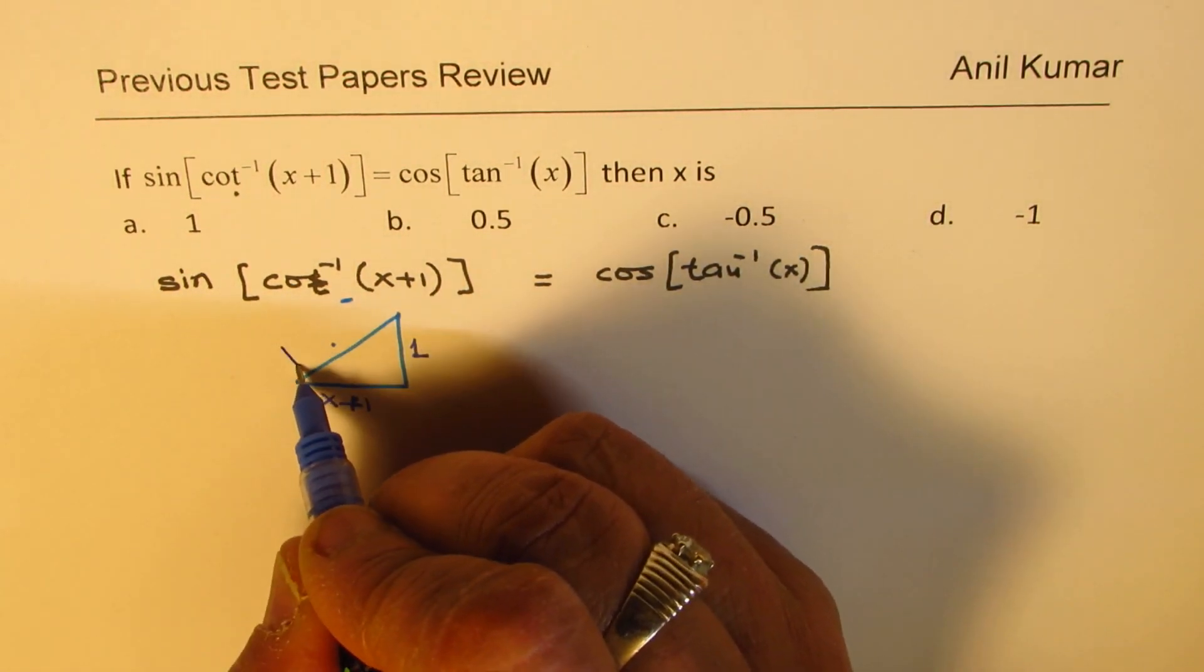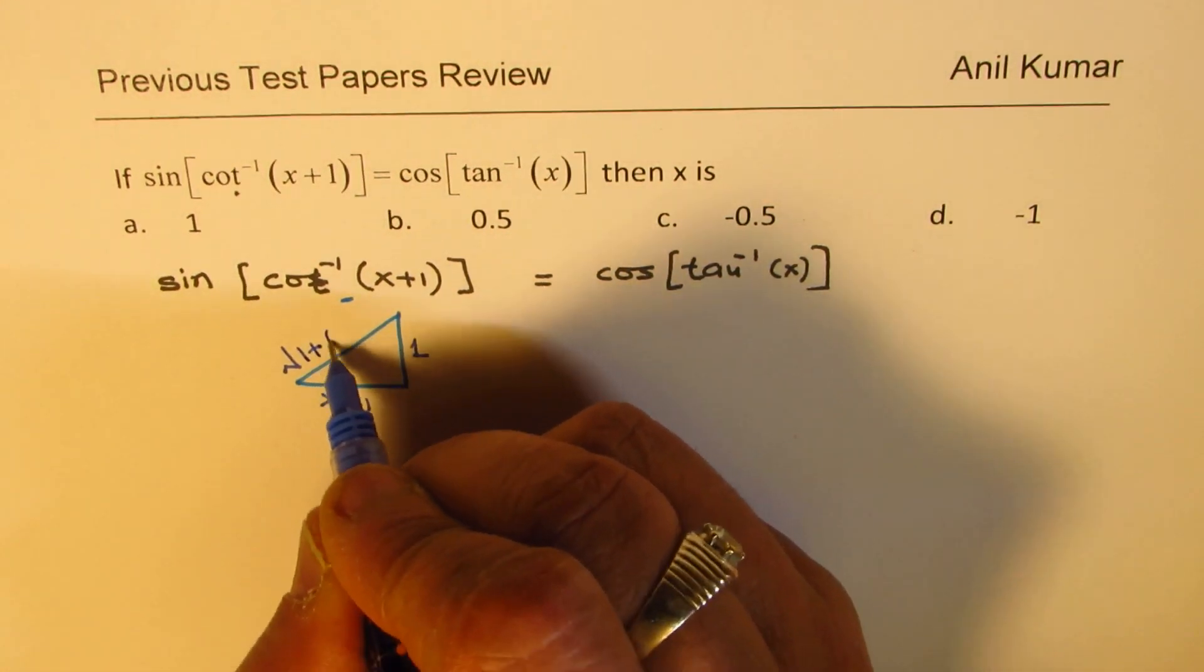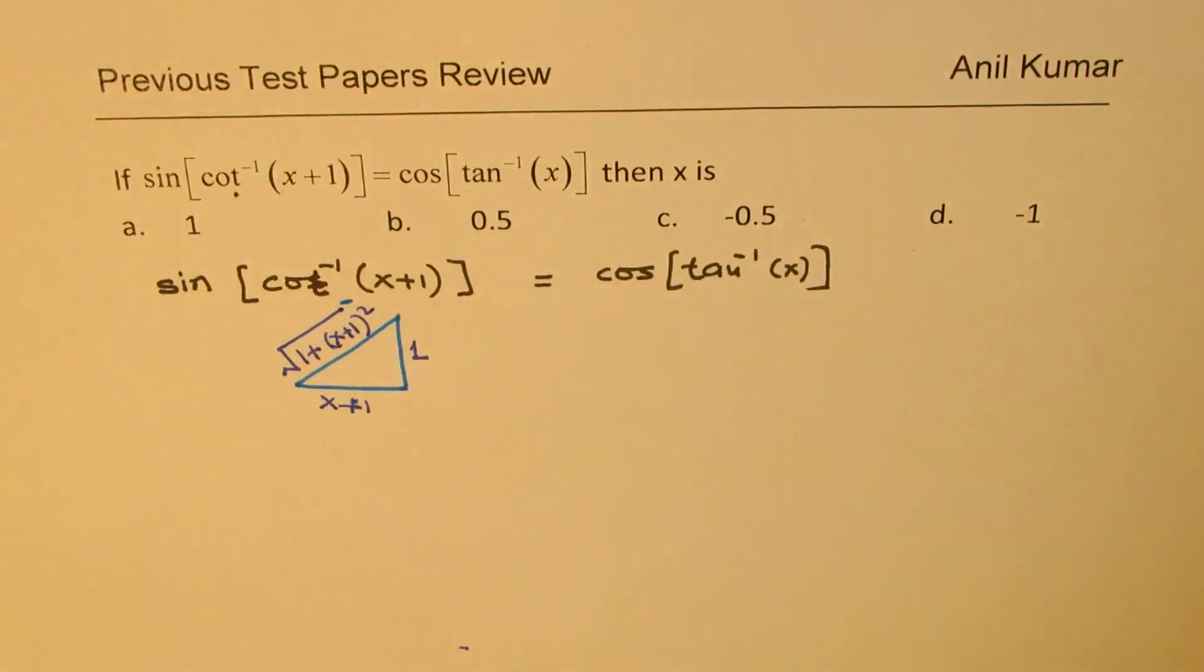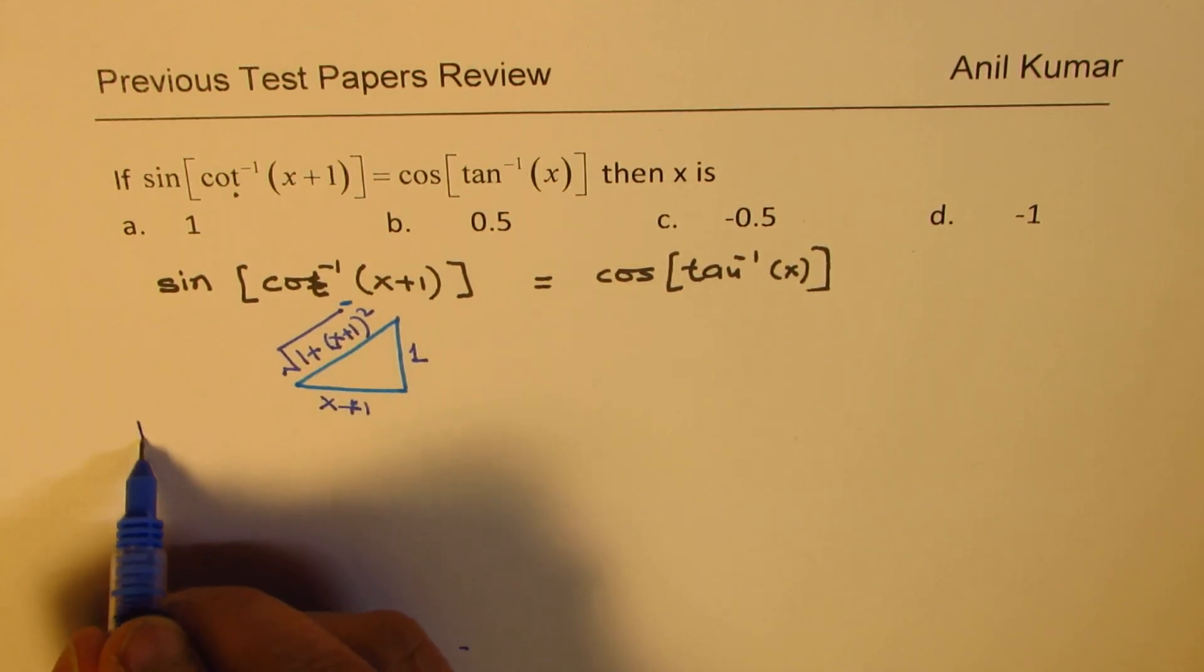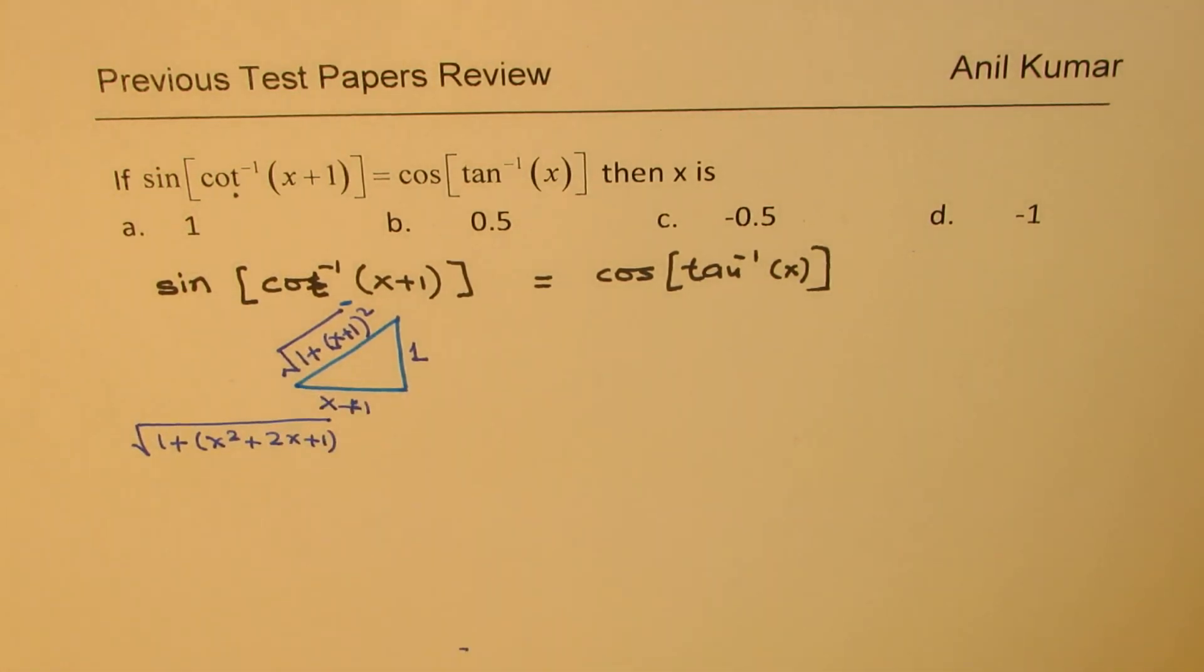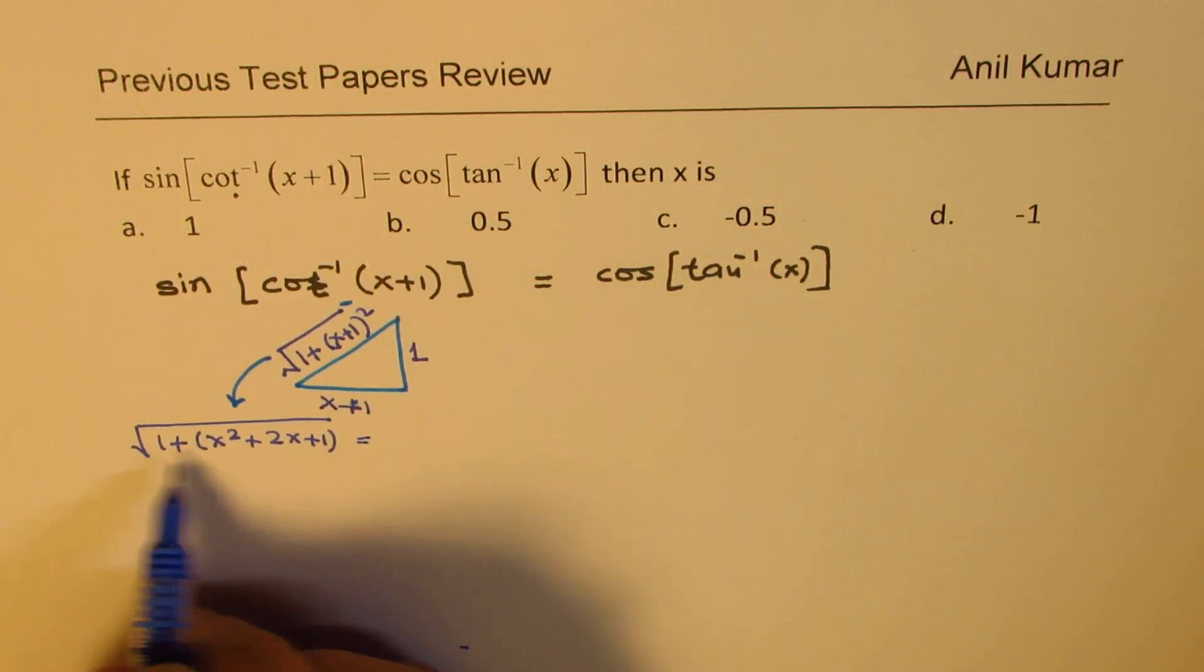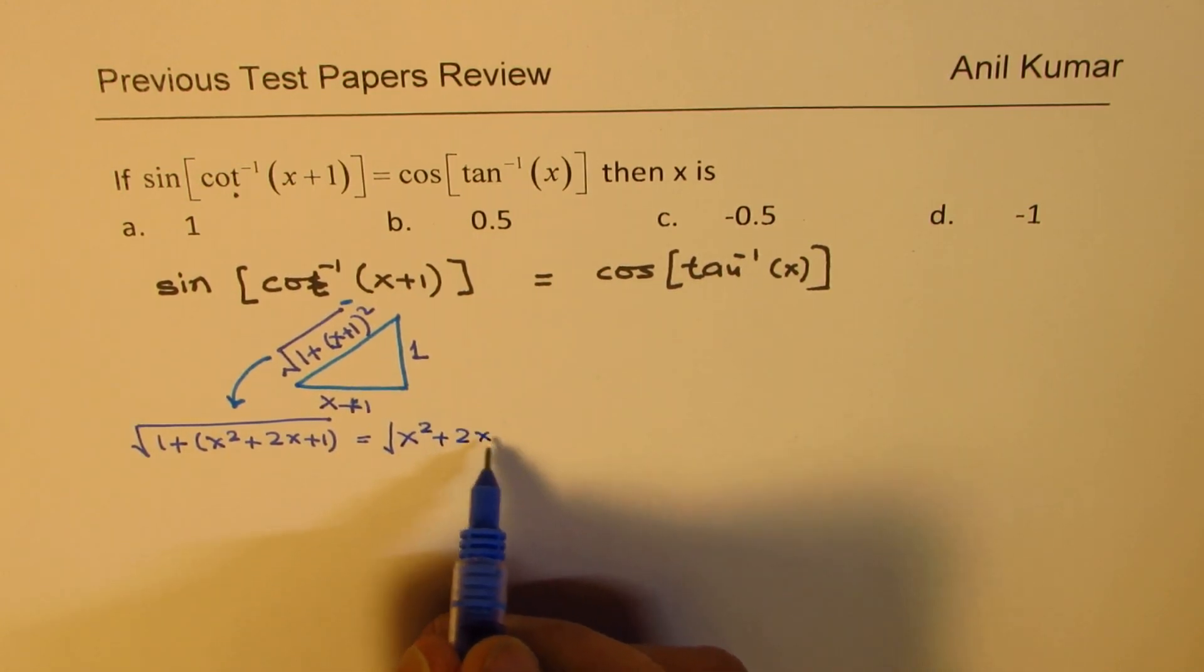So what will be this side? This side is going to be square root of 1 plus (x plus 1) whole square. So that is going to be the other side, the hypotenuse. Now you can actually calculate this out. 1 plus x squared plus 2x plus 1. When you open the bracket, you get square root of (x squared plus 2x plus 2).